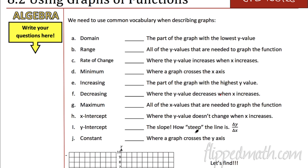We're going to start with a lot of vocabulary words. We already know what these things are — for the most part it's review. What I want you to do is pause the video. I'll do the first one for you: the part of the graph with the lowest y value — that's the minimum. So I'm going to put a D right there. Now go ahead and fill that list out. Pause the video.